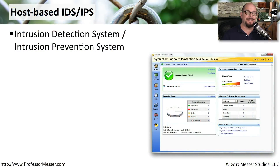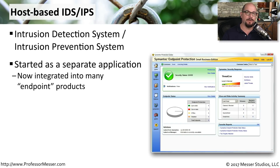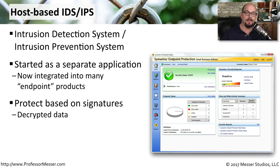In most of our operating systems these days, we're running software called an intrusion detection system or intrusion prevention system. These IDS or IPS softwares used to be part of a separate application, but now they've been integrated into an existing antivirus or anti-malware suite — often referred to as an endpoint security agent. It usually protects our system based on a series of known signatures, looking for specific traffic patterns, and if it sees those patterns, it's able to allow or block traffic going through our operating system.